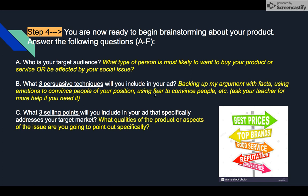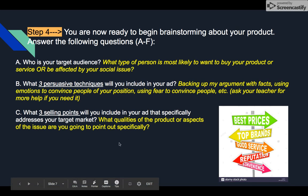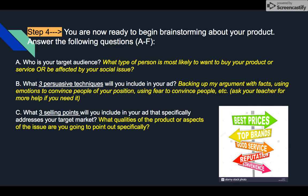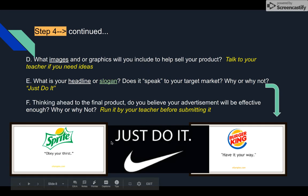For example, you might use fear — there's a lot in the news about the dangers of vaping, like people's lungs collapsing, and that's one way to persuade people. There are other techniques too, so ask your teacher if you need more help. Also think about what three selling points you'll include in your ad for your target market — what qualities or aspects of the issue are you going to highlight? Examples include best prices, top brands, good service, reputation, and convenience.